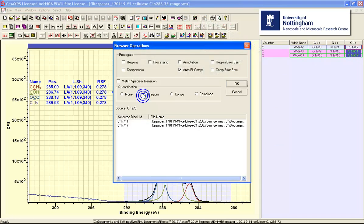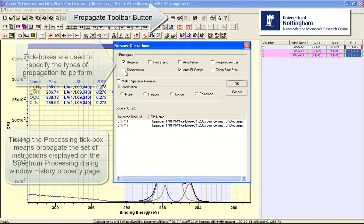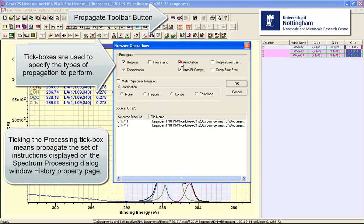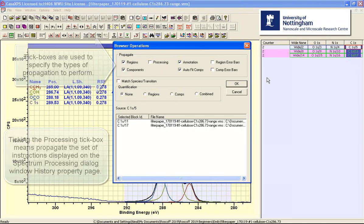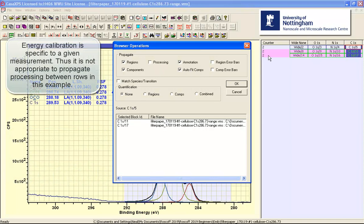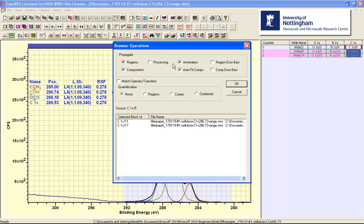Right-click over the displayed data with the peak model, select the regions, components, annotation, not processing because processing includes the energy calibration, so we have independent calibration for each row. So we do not wish to propagate processing, but we do want to propagate regions, components, annotation, and also auto-fit.